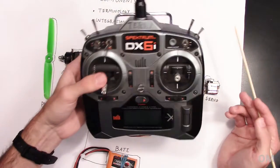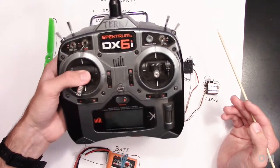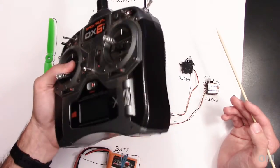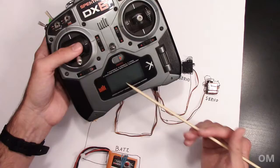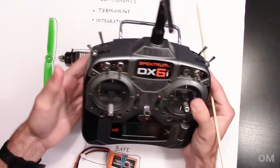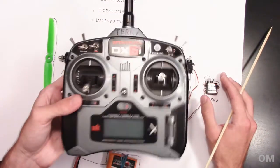So here I have a transmitter. This is a Spectrum DX6i, pretty common, pretty decent transmitter, great first transmitter. It works fine. You can have a bunch of different models and stuff. You can do a bunch of different things with it, so that's great.